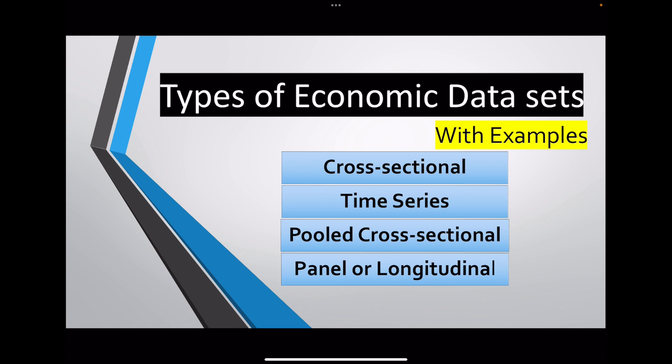Basically there are two types of datasets: one is cross-sectional and another is time series. These are the main two, because if we understand these two we will definitely understand the later two, since pooled cross-sectional and panel datasets share the features of time series and cross-sectional. Let's explore these four types of datasets one by one.